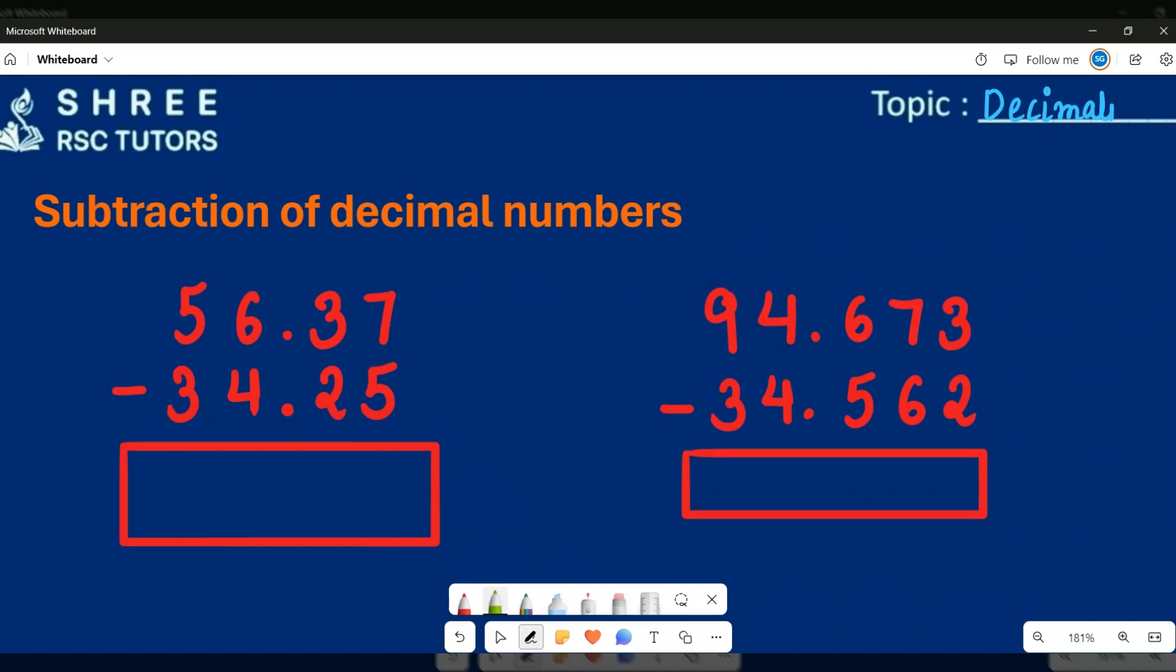The rule is very simple. As you know, whenever we were doing column subtraction, we were starting from the right-hand side, that is the ones column. But here, because this is a decimal number, we cannot guarantee that the number will always start from the ones column.